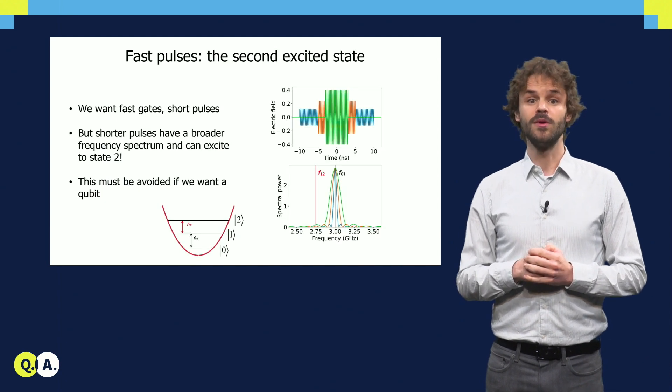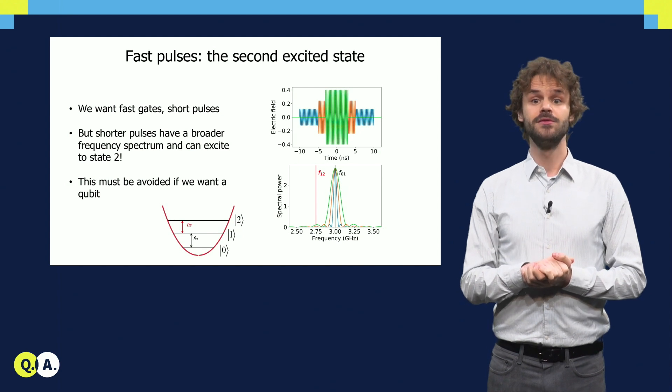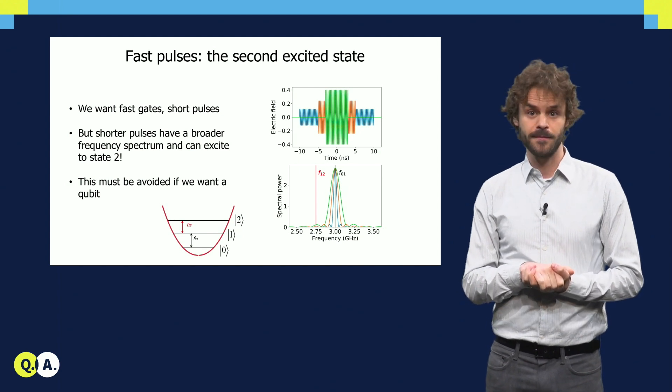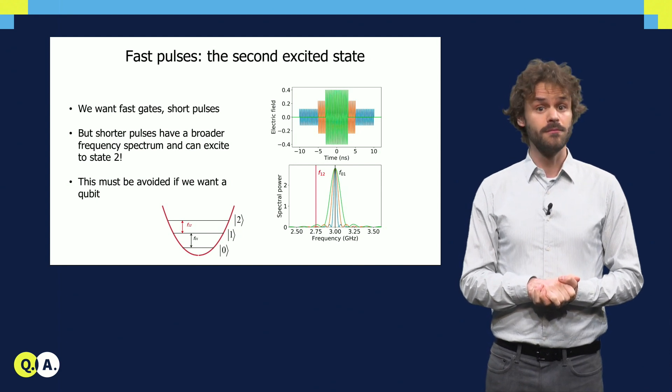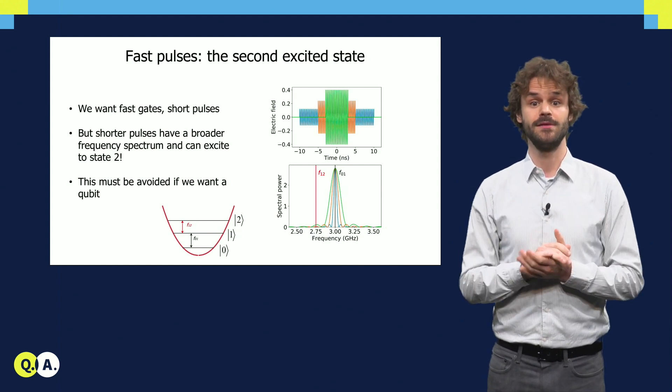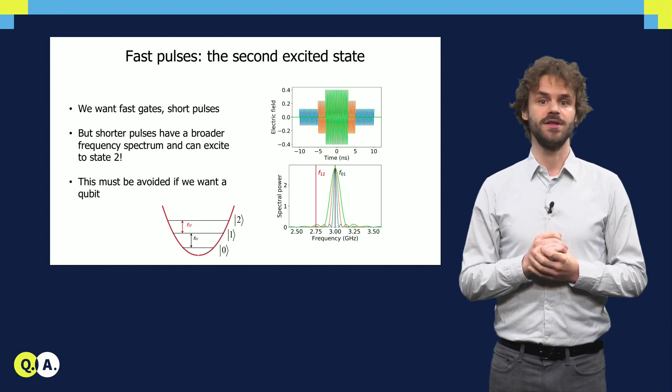Of course, we want to make the pulses as short and strong as possible to be able to do quantum computations quickly. However, the shorter the pulse, the more frequency components it has besides the transmission frequency F01. We can see this by looking at the spectral decomposition of the pulse.